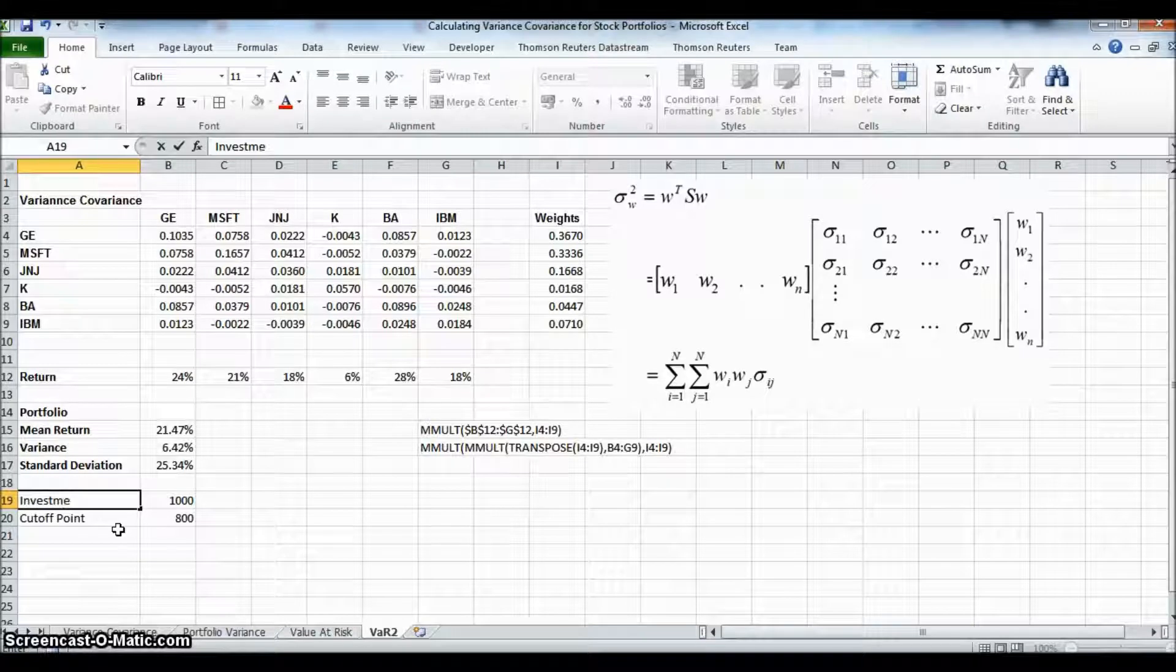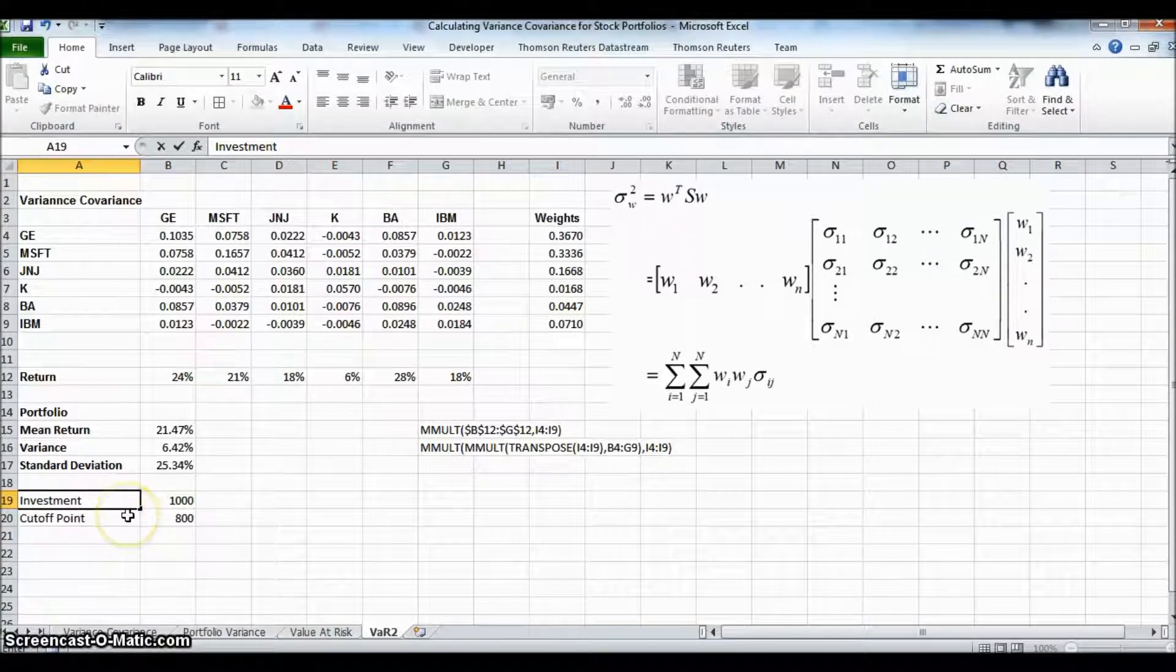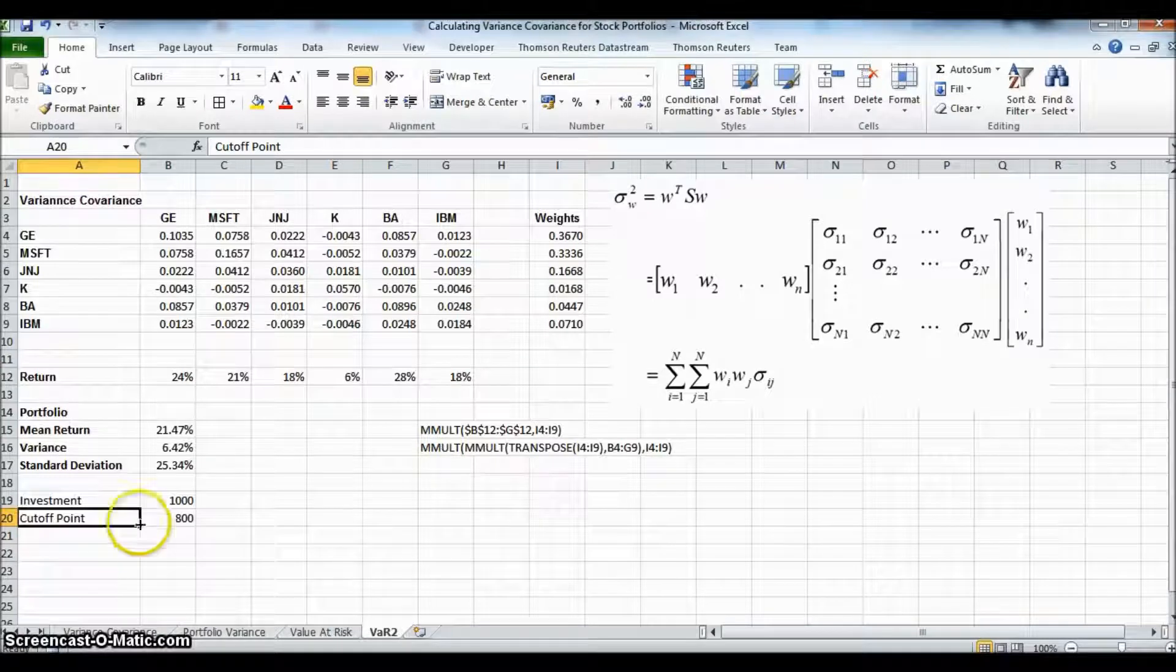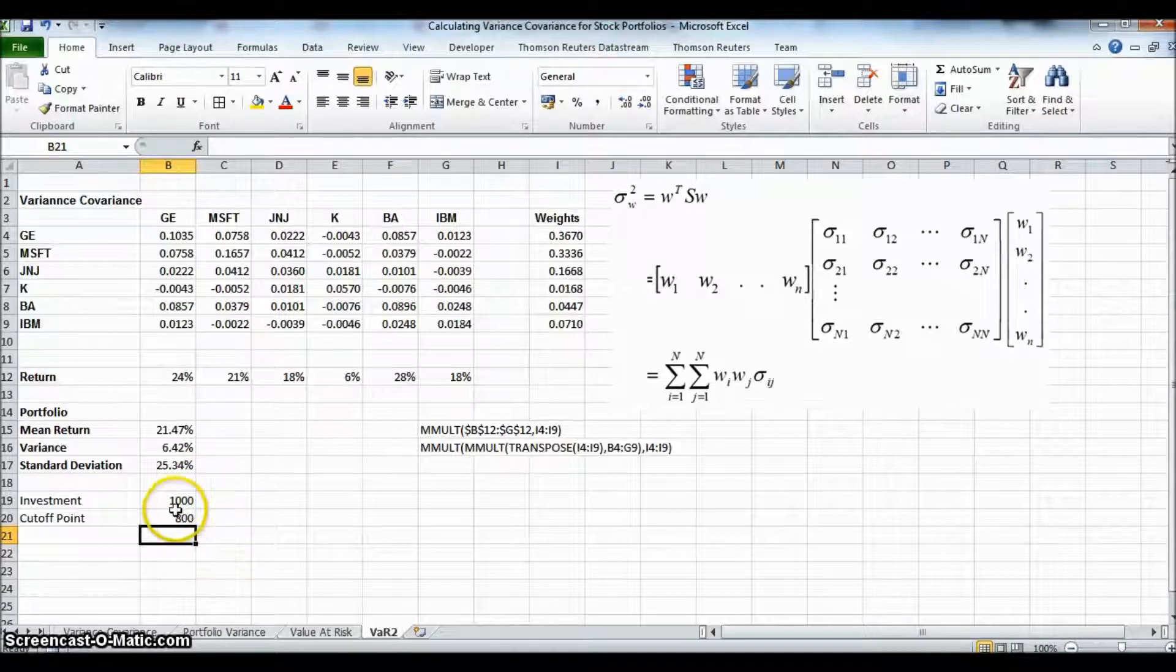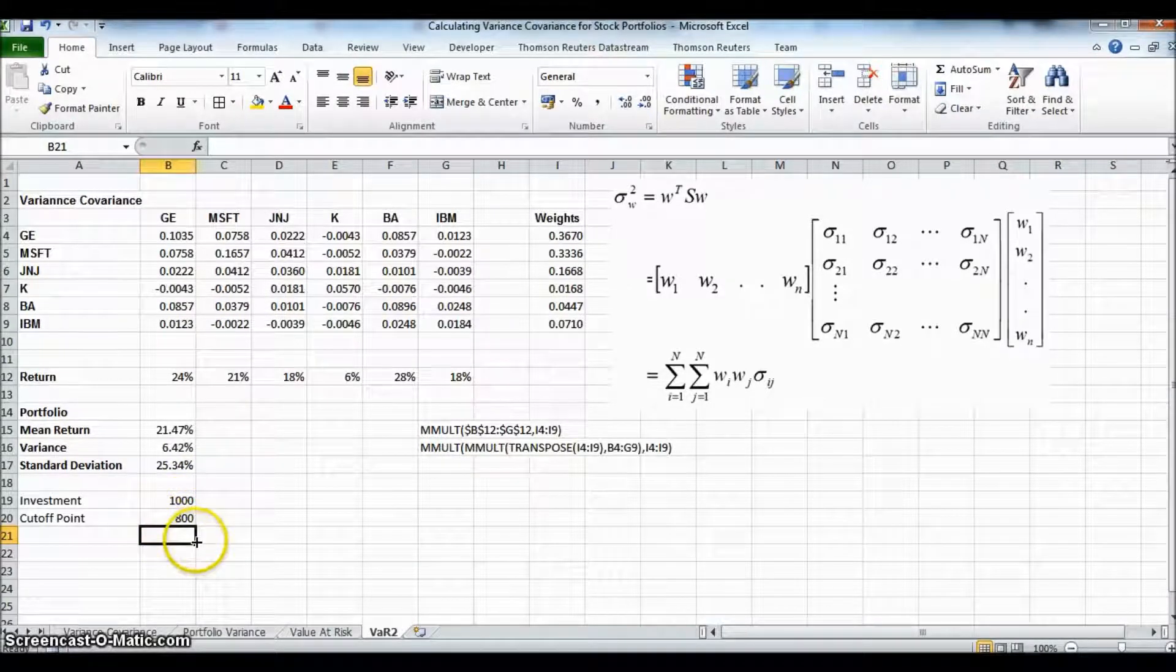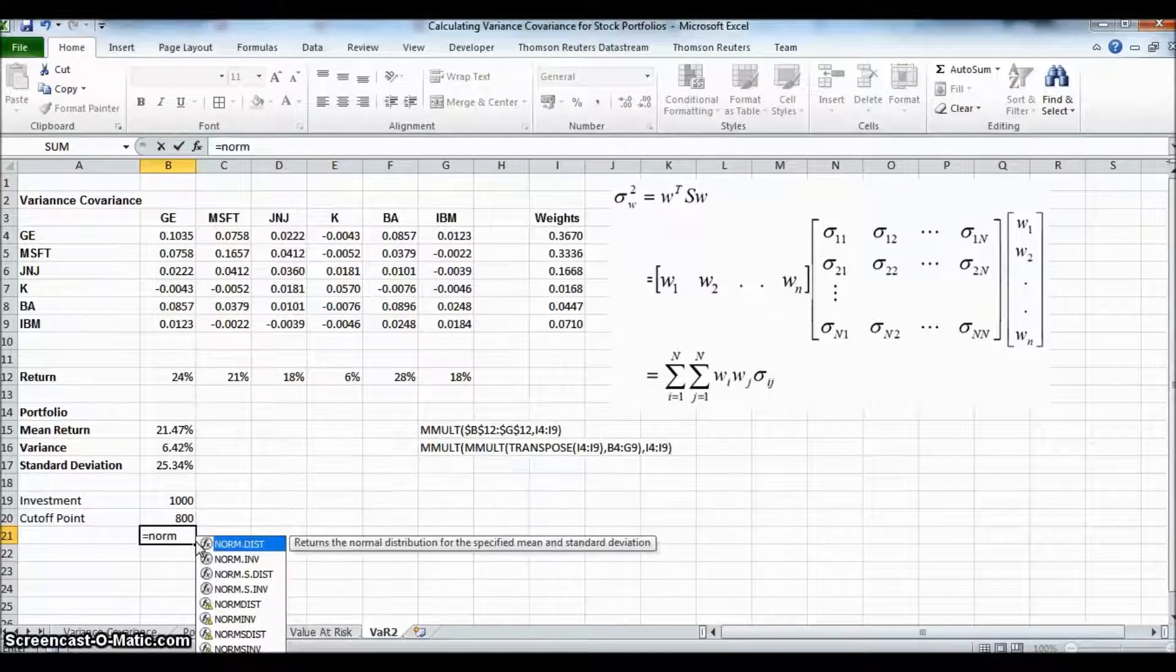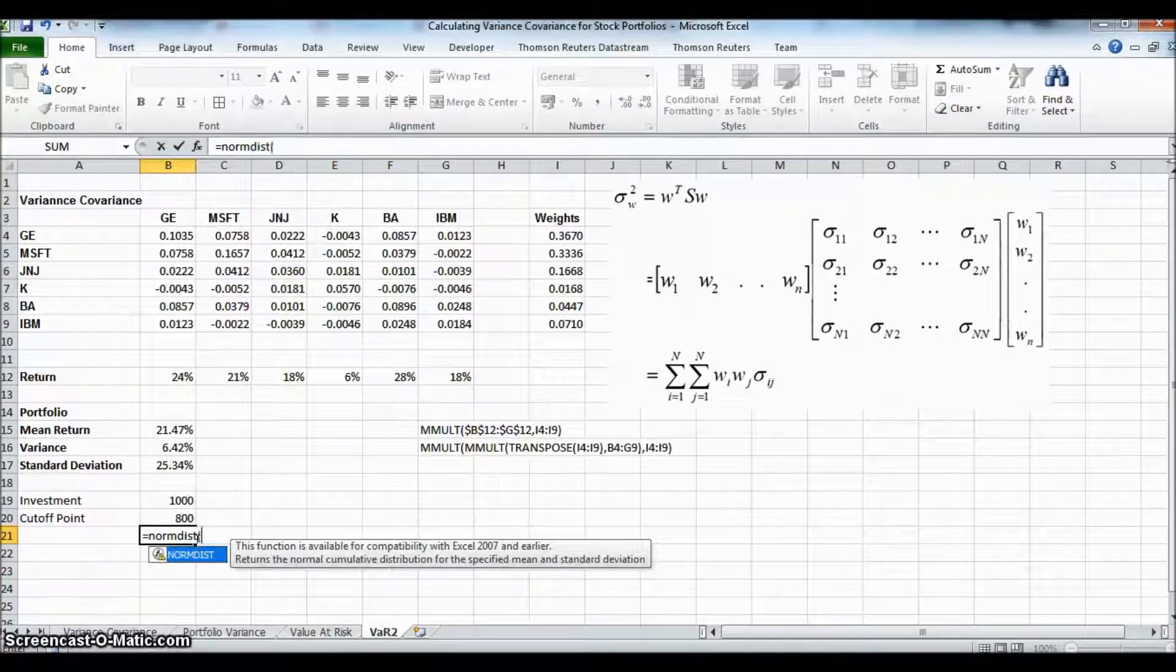So an initial cash amount tied up in the portfolio. And we could estimate the probability of finding ourselves in a position where the value of the portfolio is less than $800. And in order to make that estimation, we would say NORMDIST, not NORMSDIST, NORMDIST, open bracket.